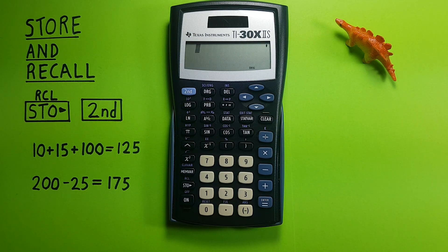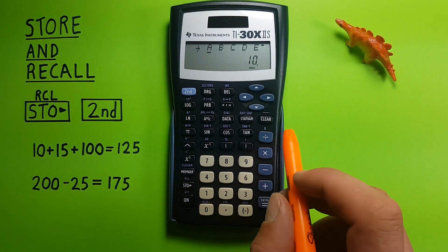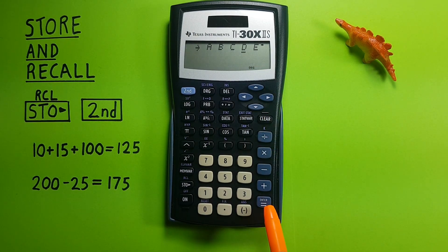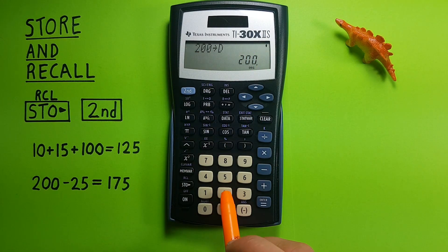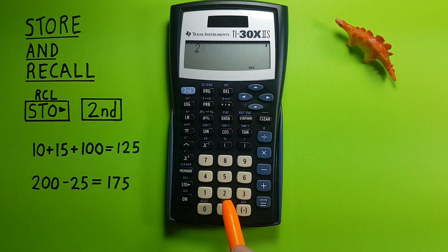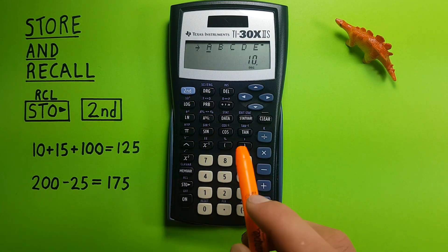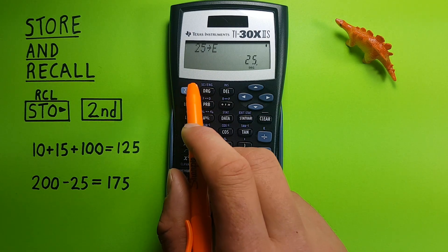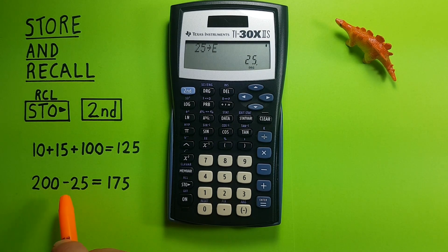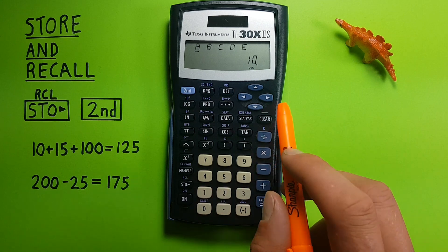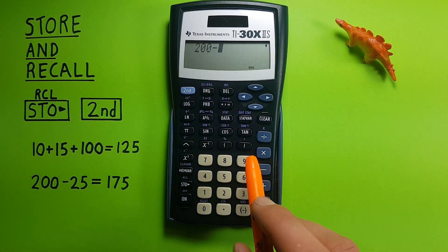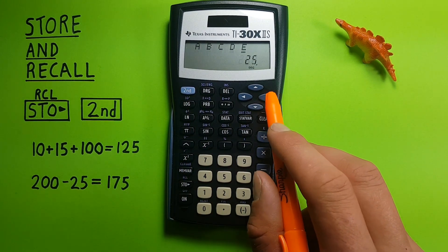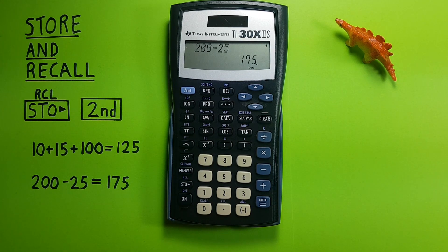Let's store a couple more numbers: 200 in the D slot and 25 in E. So 200, store, move over to D, press enter — 200 into D. And 25, store into E. We can use these in a calculation: D minus E — second function recall D, minus, second function recall E. And there we go: 175, which is D minus E, or 200 minus 25.